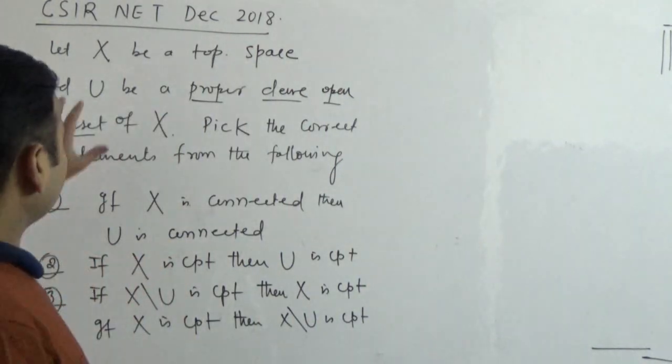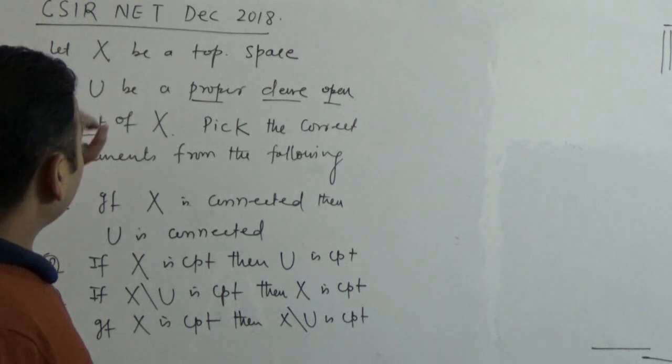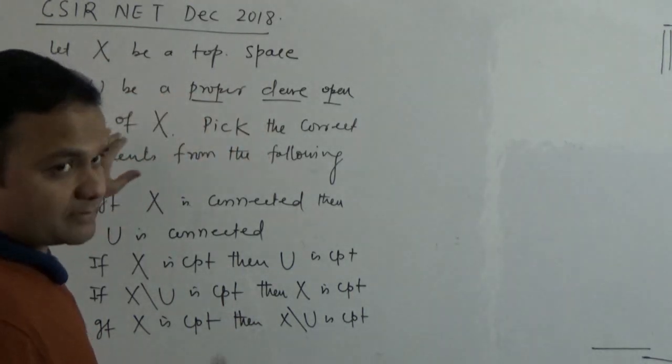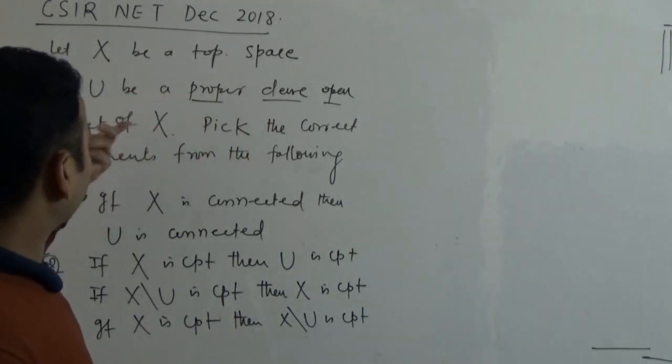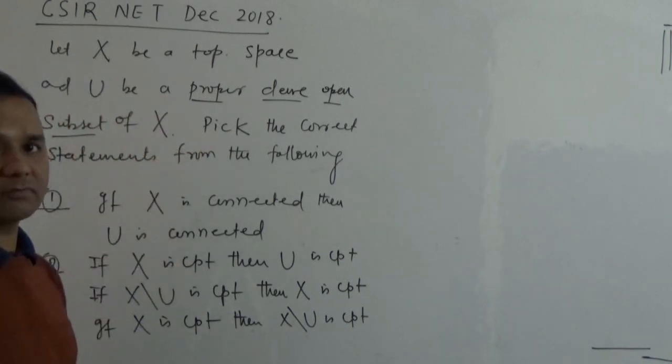So, the question is this: Let X be a topological space and U be a proper dense open subset of X. Then pick the correct statements from the following.